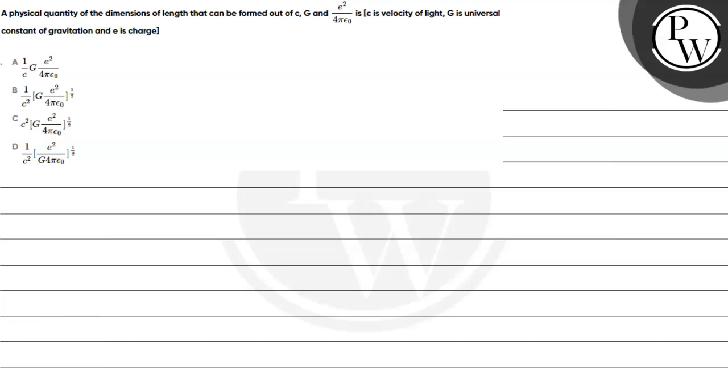Hello, let us read this question. This question says that a physical quantity of the dimension of length can be formed out of c, G, and e² by 4πε₀, where c is velocity of light, G is universal gravitational constant, and e is electronic charge.